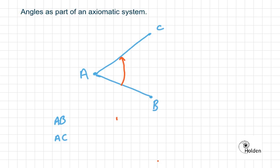This is the angle at A between B, A, and C. Then some really interesting things start happening when we introduce the line BC. Now we start talking about polygons.